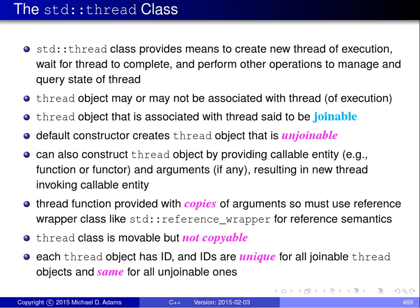A Thread object may or may not be associated with a thread of execution. A Thread object that is associated with a thread of execution is said to be joinable. The default constructor creates a Thread object that's unjoinable — not associated with any thread of execution. We can also create a Thread object by providing a callable entity, either a function or functor, referred to as a thread function, along with any arguments required by the thread function.